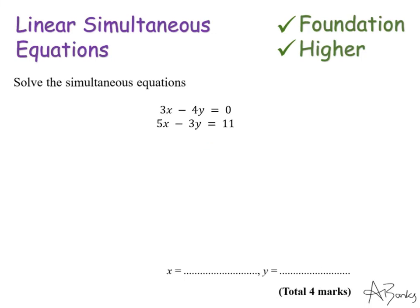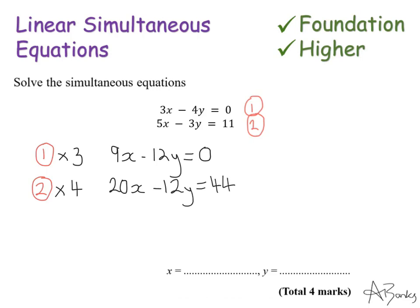Here's a second example for us to look at where the steps are going to be slightly different. So I'm going to start by numbering my equations as I did before. And again I'm going to look at my values in front of my y's. I've got a 4y and a 3y. So I'm going to make them both into 12y. So my first equation needs multiplying by 3. This will give me 9x minus 12y equals 0. And my second equation needs multiplying by 4. It gives me 20x minus 12y equals 44. These are my equations 3 and 4.